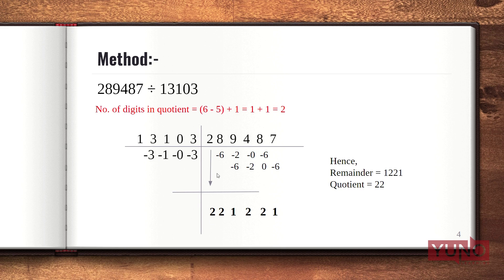So 2 multiplied with minus 3 is minus 6, 2 multiplied with minus 1 is minus 2, 2 multiplied with 0 is 0, and 2 multiplied with minus 3 is minus 6. These products are written below the corresponding digits of the dividend.